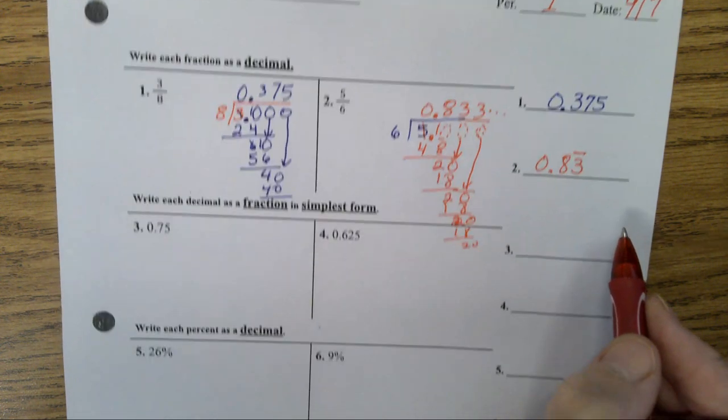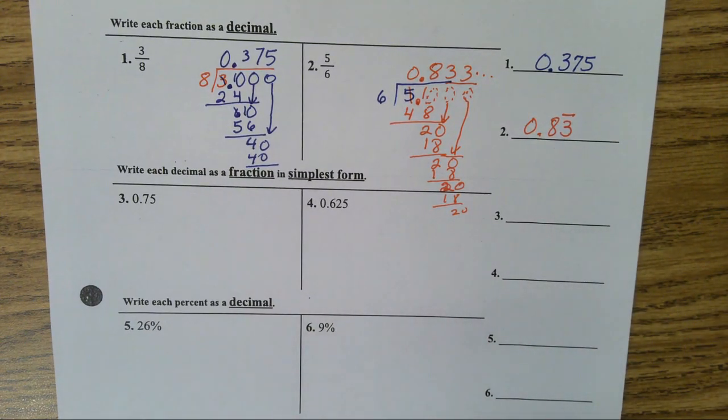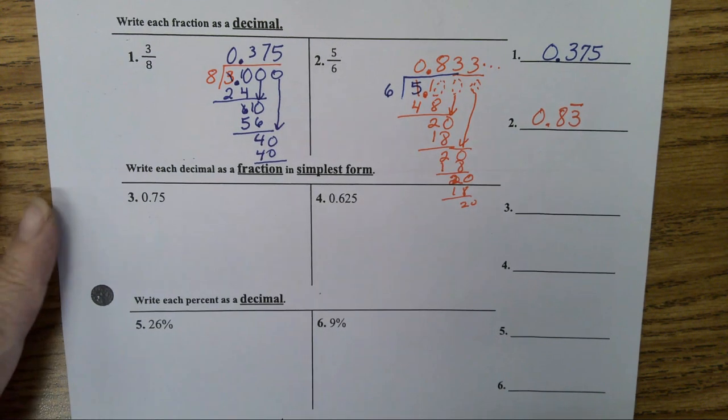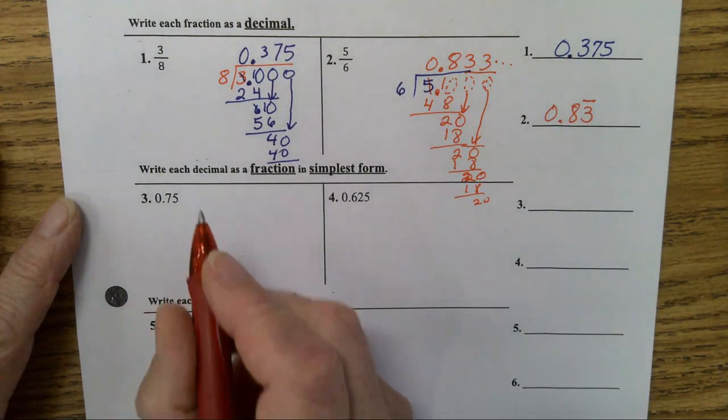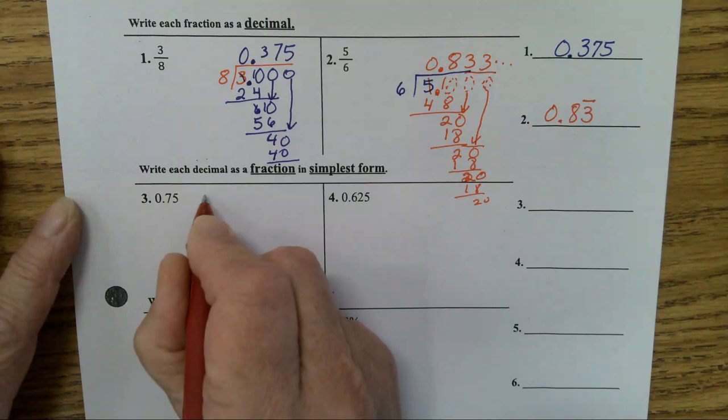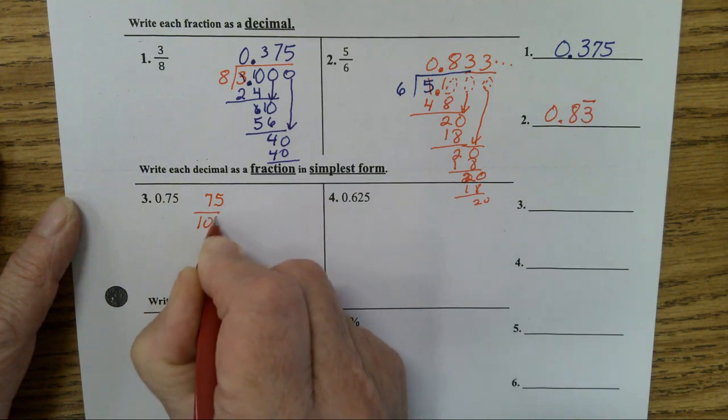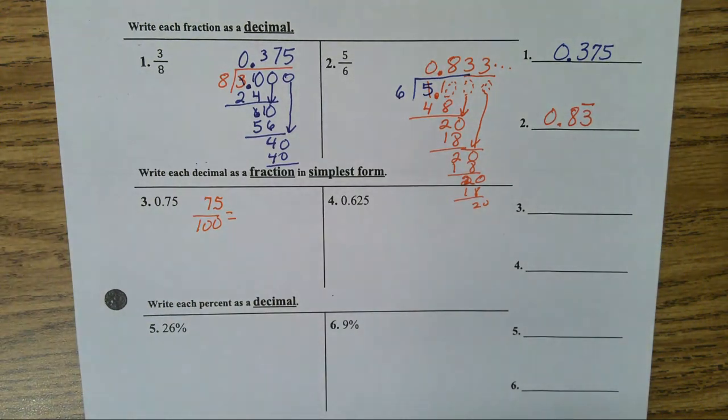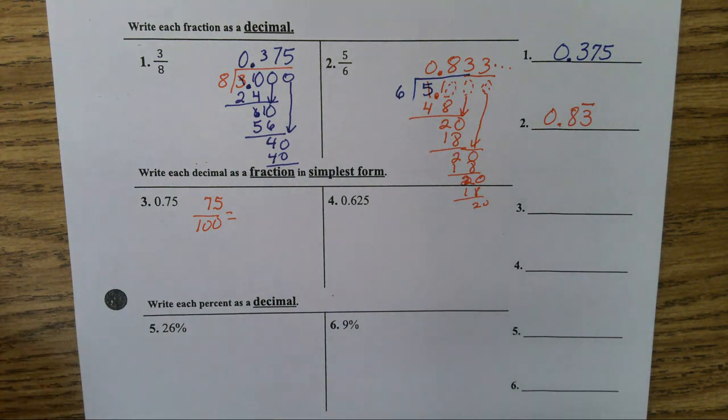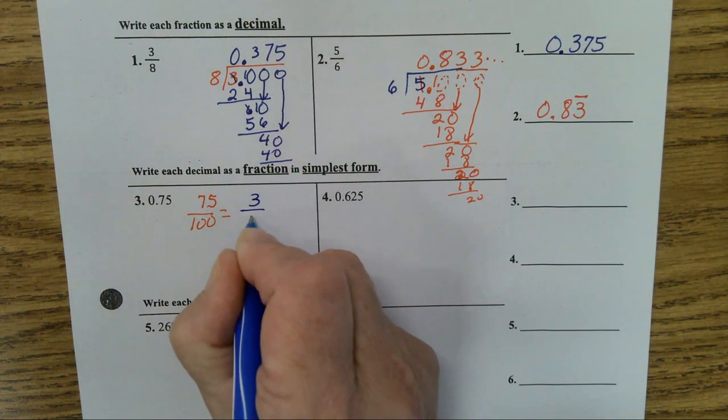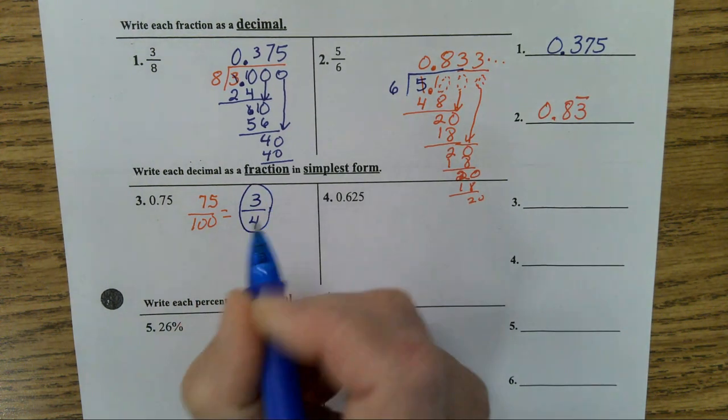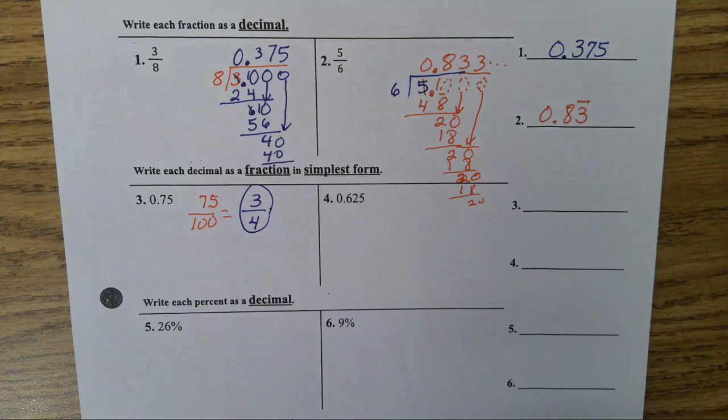Now, let's do the next section. It's a little bit easier to do. Write each decimal as a fraction in simplest form. Well, when you read that problem, that's 75 hundredths because the 5 is in the hundredths place. Now, we have to put it in simplest form. Some of you already know this one. What will divide 75 and a hundred? 25. Yeah, you think of quarters. 75 divided by 25 is 3 and 100 divided by 25 is 4. You should know that 75 hundredths simplifies to 3/4 and put your answer on the blank.